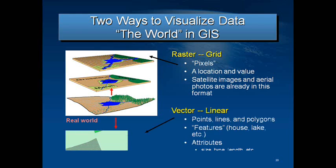Now, vector layers. These are represented as points, lines, and polygons. A vector layer cannot mix types together — one layer cannot have a point and a polygon in the same layer. The layer would have to be split into two separate layers: one for points, one for polygons. The bottom image of this slide is an example of at least three separate vector layers forming a single image.